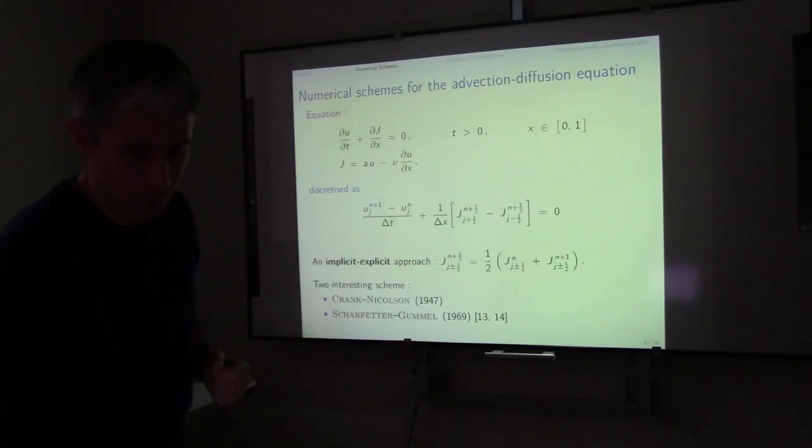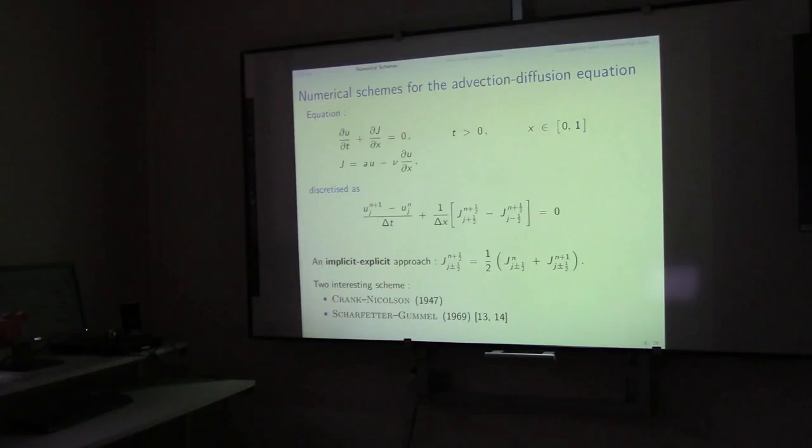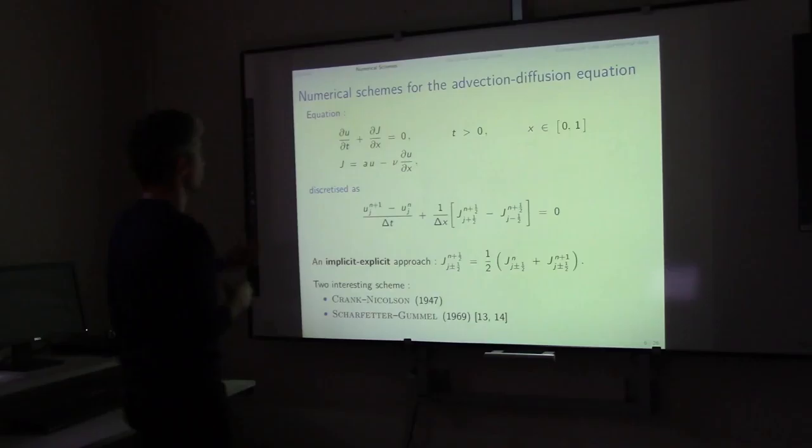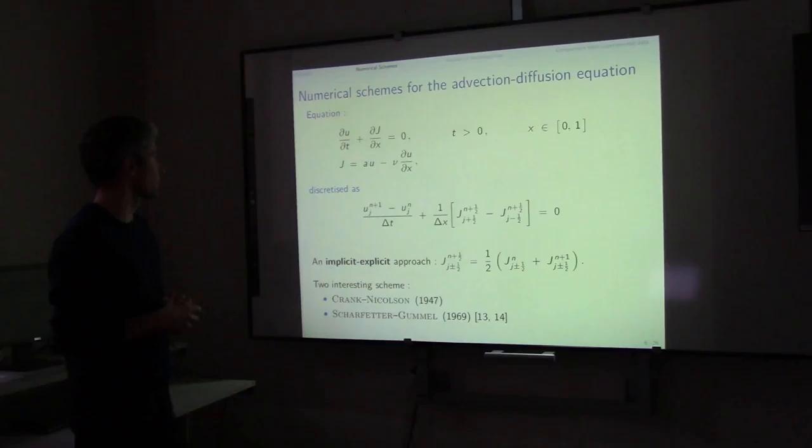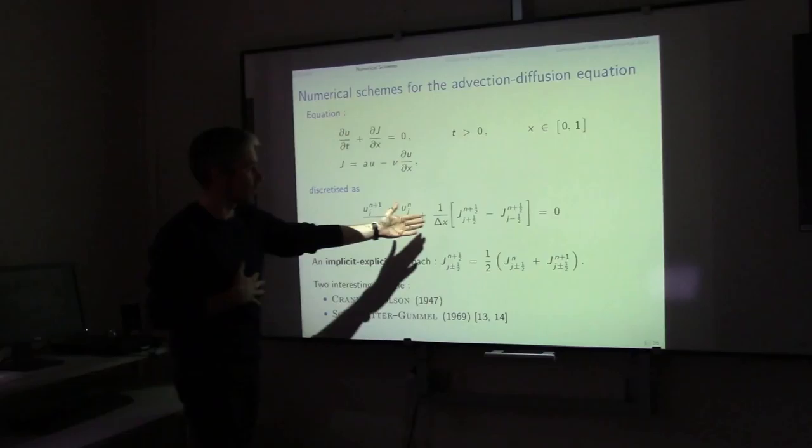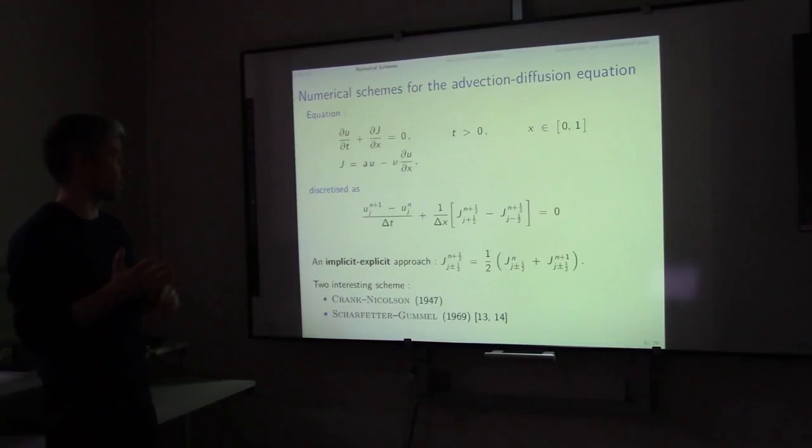I will explain the numerical schemes we used for the so-called advection-diffusion equation, written with linear coefficients for simplicity. We can discretize this equation using an implicit-explicit approach, with the flux J at the half-boundary between cell x_G and x_{G+1}. We can use two kinds of schemes: the Crank-Nicholson one, or the Scharfetter-Gummel scheme.